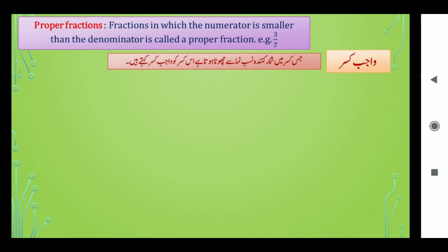Example: three upon seven — یہاں پر تین جو شمار قرندہ ہے، یہ چھوٹا ہے نصف نماز سات سے۔ ایسی قصر جس میں شمار قرندہ نصف نماز سے چھوٹا ہوتا ہے، اس قصر کو واجب قصر کہتے ہیں — the numerator is smaller than the denominator.